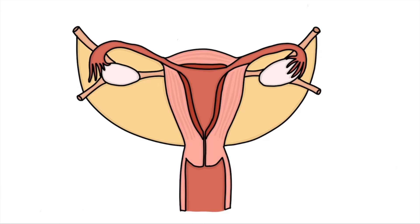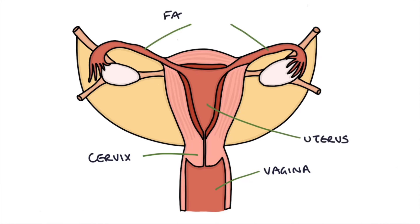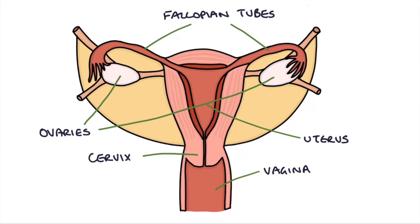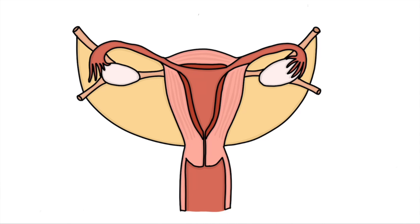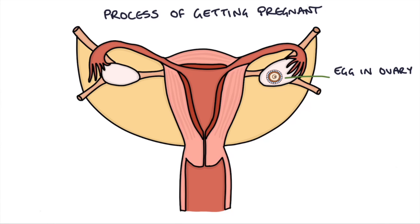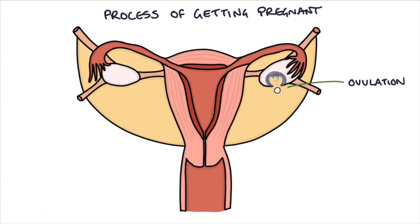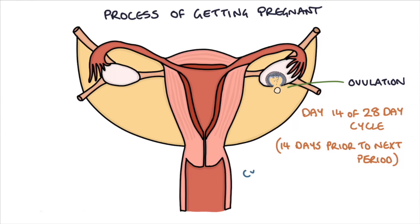Let's look at the basic anatomy and physiology of getting pregnant. Key landmarks are the vagina, the cervix (the neck of the womb), the uterus where the baby grows, and the fallopian tubes which lead to the ovaries. An egg needs to develop in the ovary and be released in a process called ovulation, which happens around day 14 of a 28-day cycle — specifically 14 days prior to the onset of the next period. So if the cycle is 34 days, ovulation happens on day 20; if it's 24 days, ovulation happens on day 10.